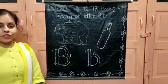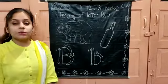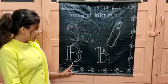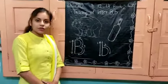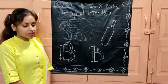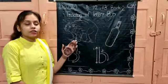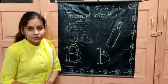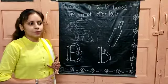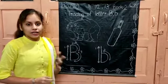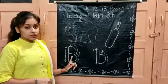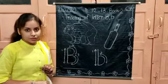Our next topic is English. In English, we will be doing letter B tracing today — capital B tracing and small b tracing in book number 2 only. In the previous videos, you must have seen that you have learnt various things starting with letter B, like ball, bet, bear, balloon, and many more things. So in this video, we will be starting the tracing of letter B.